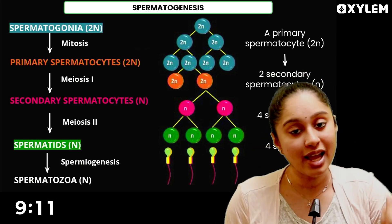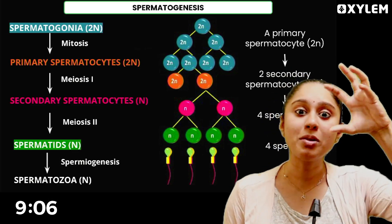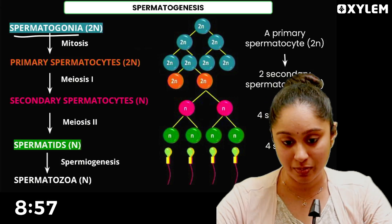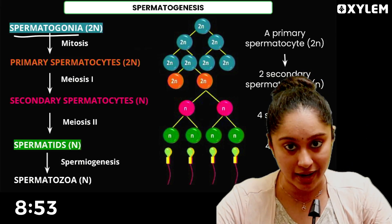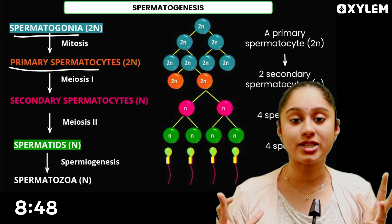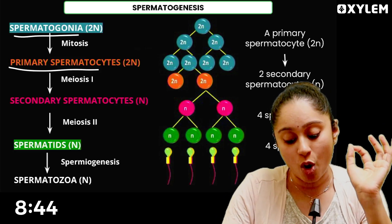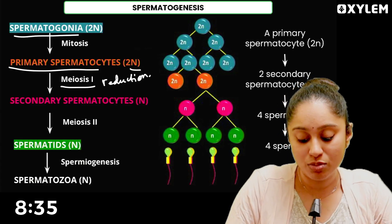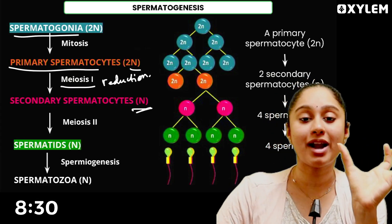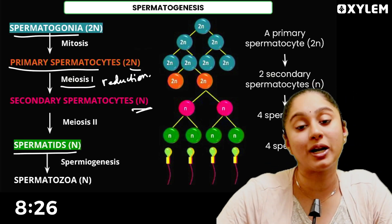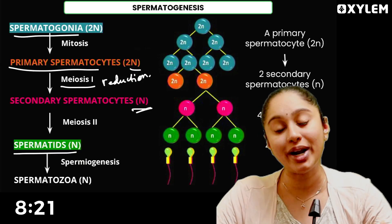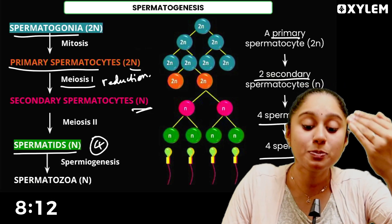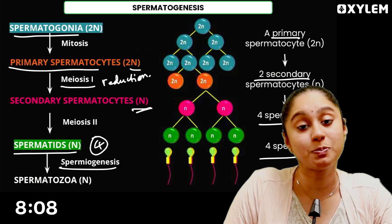Starting with Spermatogenesis: there is a mother cell called Spermatogonia, which are normal diploid cells. The primary spermatocyte undergoes meiosis 1 to form secondary spermatocytes, then meiosis 2 produces spermatids — each with N number of chromosomes, so haploid. From one primary spermatocyte: 2 secondary spermatocytes, 4 spermatids. The spermatids then undergo Spermiogenesis to form spermatozoa — 4 spermatozoa in total.